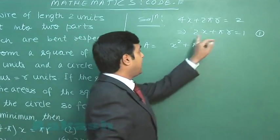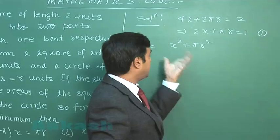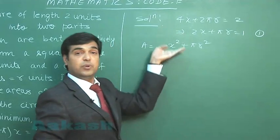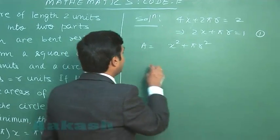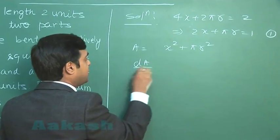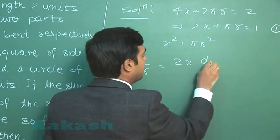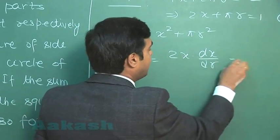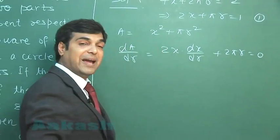Option 1, we can take the value of x and substitute it here. Option 2, differentiate these two equations with respect to x or r, any of the two variables. Let us start with dA/dR as 2x dx/dR plus 2πr equals 0 for maxima or minima.